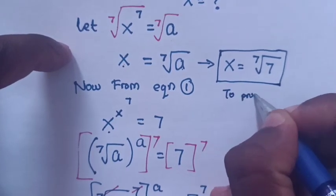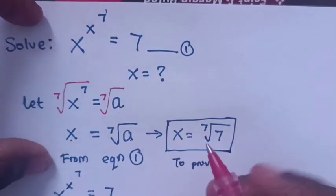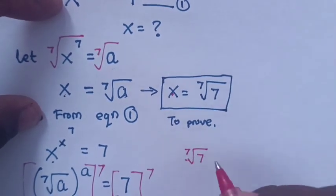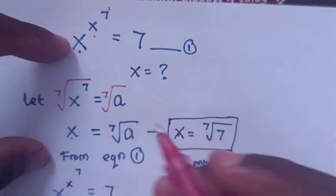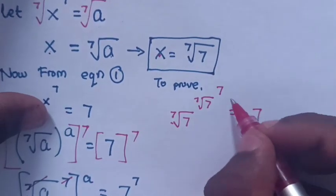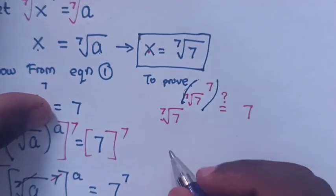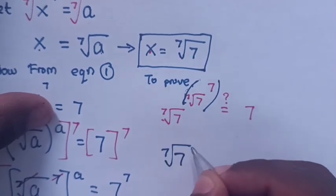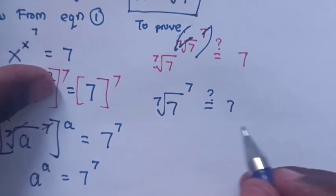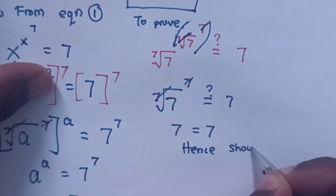Now let's prove if the value of x is true. From x power x power 7, we substitute the value of x. So it will be: 7th root of 7, raised to the power of 7th root of 7, raised to the power of 7, is equal to 7. We can see that 7 and 7th root cancel to remain 7, and again 7 and 7th root cancel, so it remains 7 is equal to 7. Hence, proved.